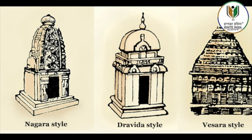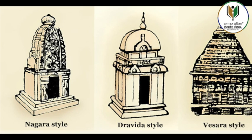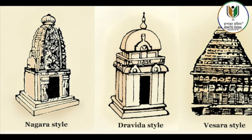Sculptures of the bull Nandi, Shiva's mount, line the temple walls, and these along with the carvings on the temple's lower walls have suffered severe disfiguration due to erosion by salt water laden air over the centuries.